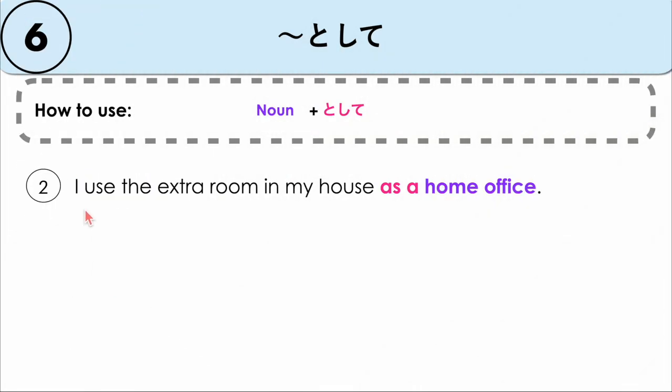Another example: I use the extra room in my house as a home office. In this example, we are describing the use of another thing. The room, other than being just the room, we are explaining its other purpose. In this case, the room is used as a home office.